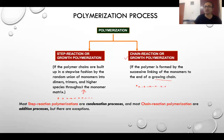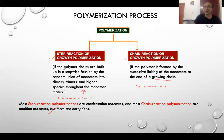Random union of monomers leading to dimers, trimers, and higher species is classified as step-reaction or step-growth polymerization. There is also ambiguity in this newer classification — some reactions resemble chain-growth polymerization but involve condensation processes — but most of the time this classification works well for practical purposes.